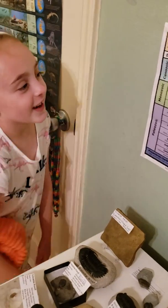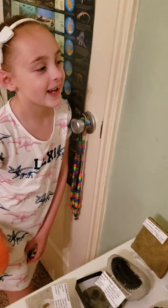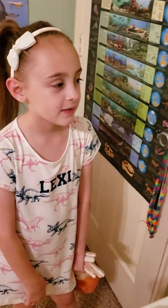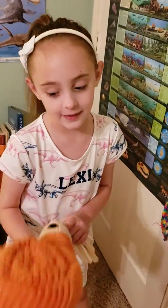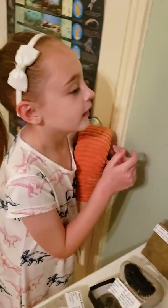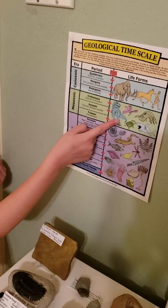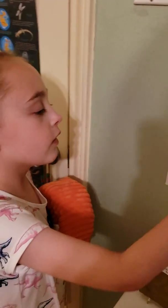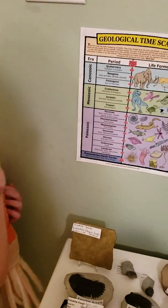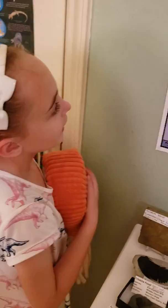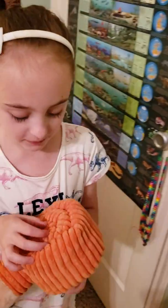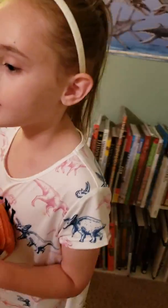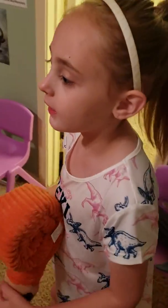The Triassic, Jurassic, and Cretaceous are the time periods used in the Mesozoic. The Mesozoic is a time of dinosaurs and it ended 66 million years ago.